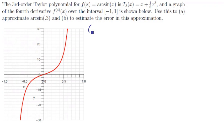So let's start off by taking care of part a first. Remember that arcsin is approximated by its Taylor polynomial, so arcsin(x) ≈ x + (1/6)x³.